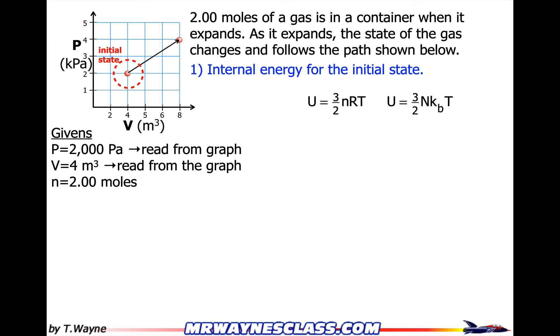The internal energy is 3 halves NRT, or 3 halves NKBT. The NKBT doesn't do me a lot of good, but the NRT does, because the ideal gas law says that PV equals NRT. So I can replace PV for NRT. So the internal energy is 3 halves PV. Now that's very doable: 3 halves, 2,000 pascals times 4 meters cubed. So I can find the internal energy from any state on here by looking at this as 3 halves and then replacing NRT with PV to figure out my values. And this gives me 12,000 joules for the internal energy.